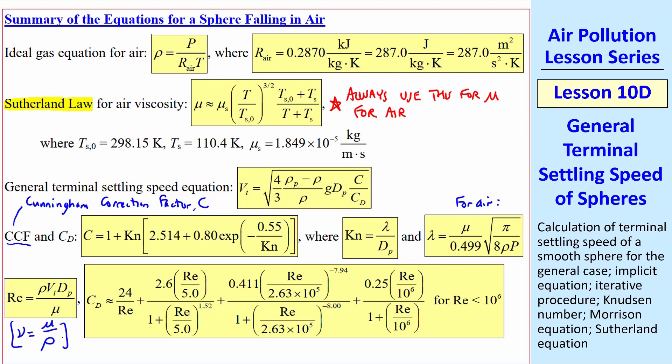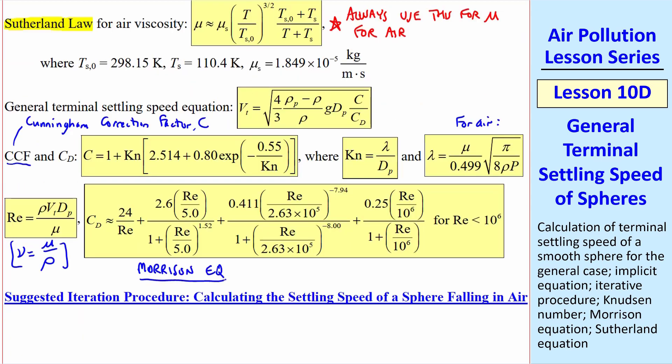we have Reynolds number, and if you prefer, you can use ν, which is μ over ρ, and this expression for drag coefficient as a function of Reynolds number. This is the Morrison equation, which I also introduced in a previous lesson.